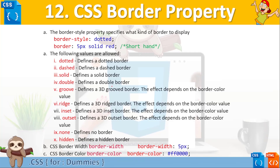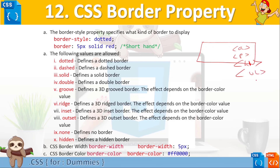There are basically two things we can do with borders. A border sets a line around a particular tag — it can be an anchor, a paragraph, an h1 tag, an ordered list, a div tag, or any HTML tag you are using. Every tag in HTML can have a border around it. Basically, border creates a line around that component.